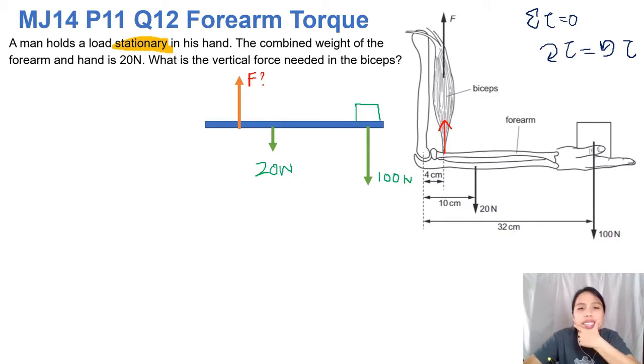Now it didn't exactly tell us what the pivot point is, but remember we can choose, and it's usually a good idea to choose the hinge. So in this case, the elbow is the hinge. So that's where your forearm will rotate about. Okay, let's do that. Let's choose the elbow as the hinge.